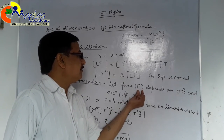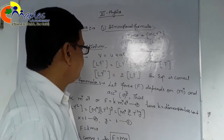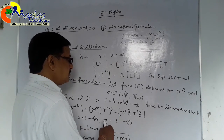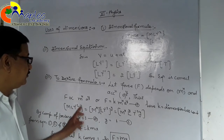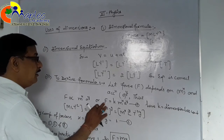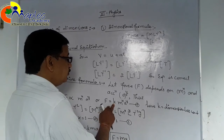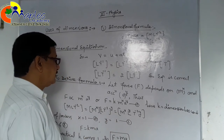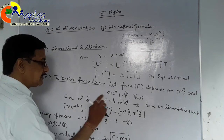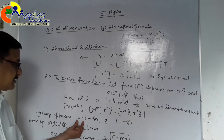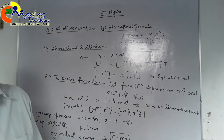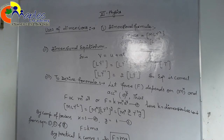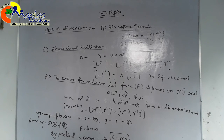To summarize: first, identify the quantities the physical quantity depends on and form a proportional relation using a dimensionless constant. Then put the dimensions of both sides, compare the powers to find x, y, z, and substitute back into the equation to get the formula. These are the three main uses of dimensions.